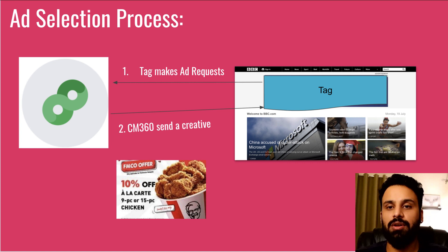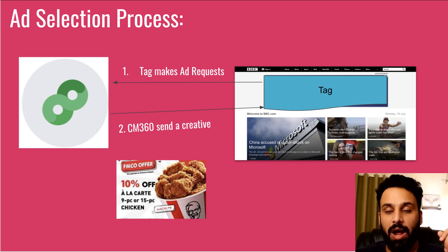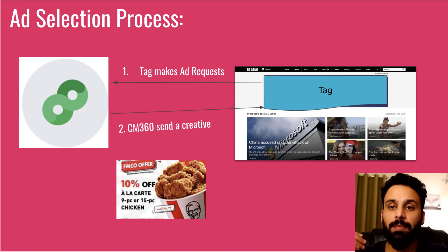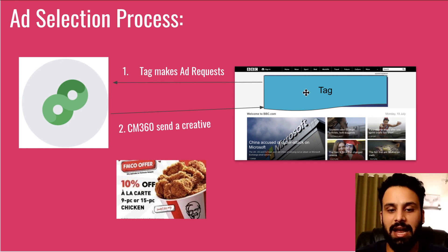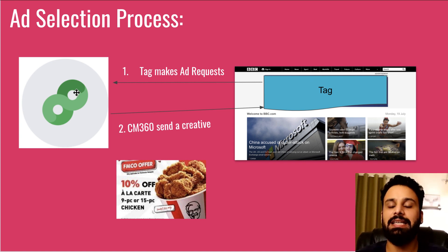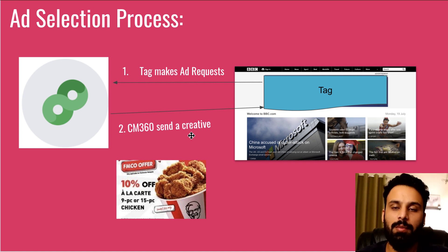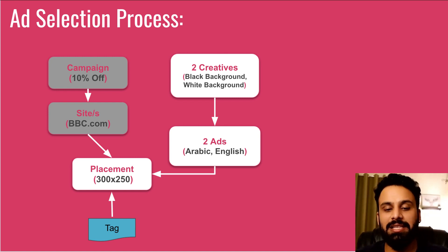Now we'll discuss the ad serving or ad selection process in Campaign Manager 360. When a placement has multiple ads targeted to it — for example one English ad and one Arabic ad for the '10% off' campaign — Campaign Manager needs to know which ad to serve for a particular request. When a user visits BBC.com, the tag makes a request to Campaign Manager requesting the actual creative, and Campaign Manager sends one creative to fill that ad slot.